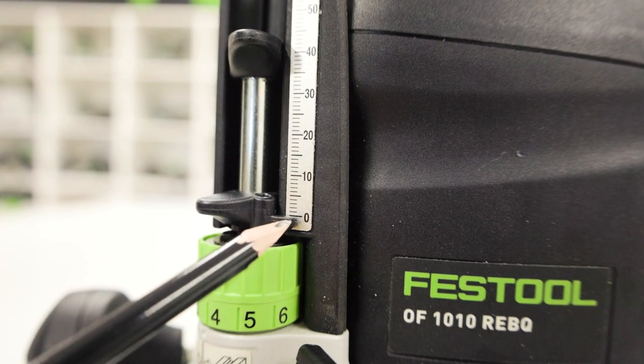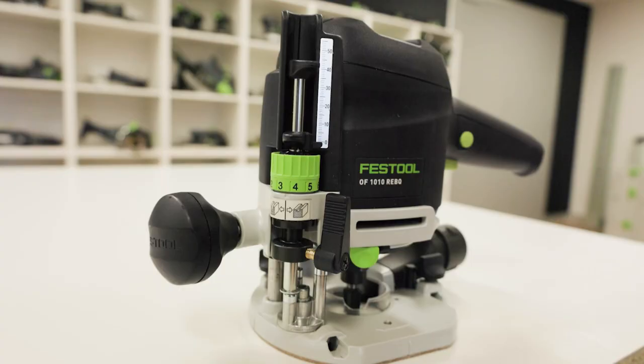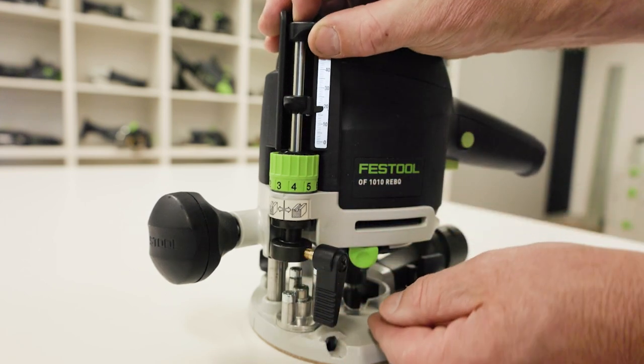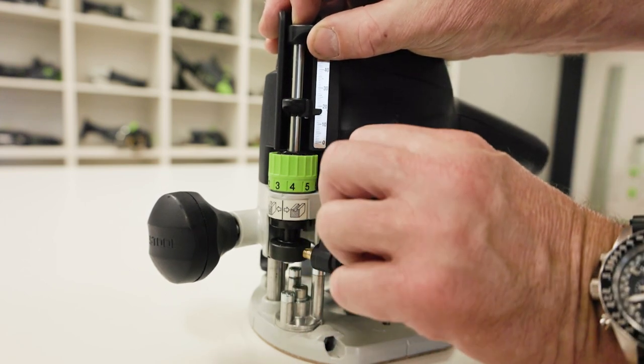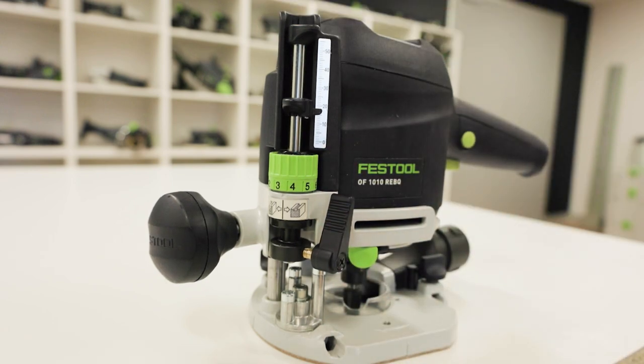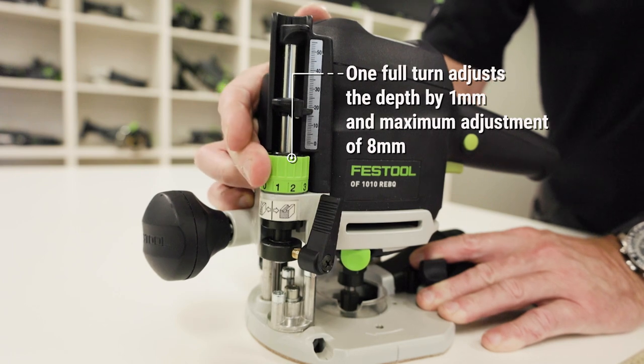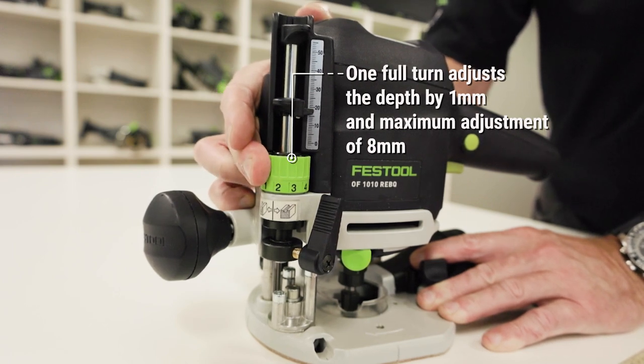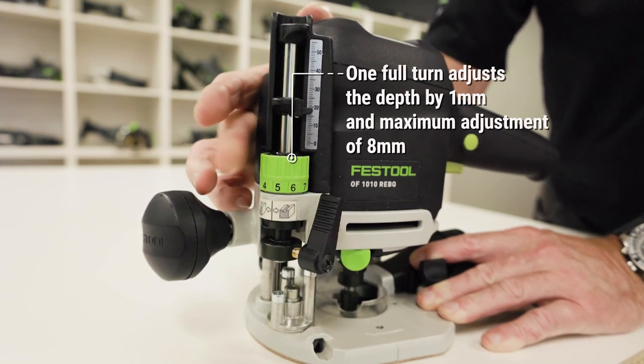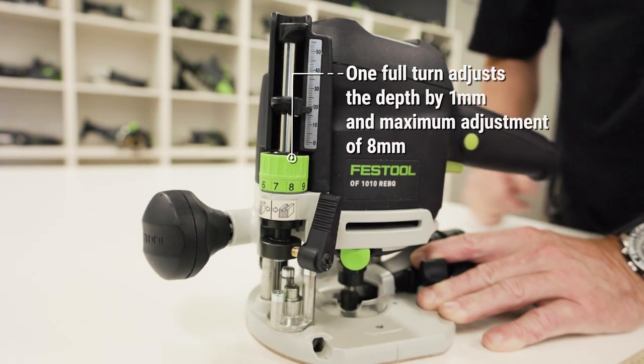The router is now ready to set the milling depth. The desired milling depth can be set by lifting the depth stop up to the desired setting then clamping the lever. You can also use a fine adjustment to alter depth. Each notch represents 1/10th per millimeter depth change and can be used to increase or decrease the cutting depth.